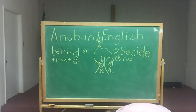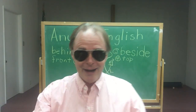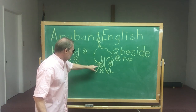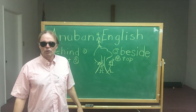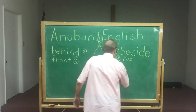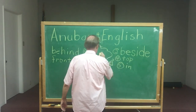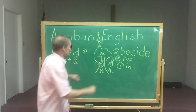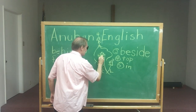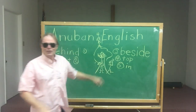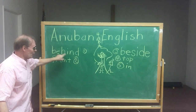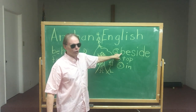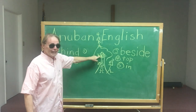So now what else can we do? We've got behind, in front, beside, and on top. What else? How about 'in'? Number five. So here we have leaves, and here's the girl — there she is. Can you see her? She's covered up — she's in the tree. So we have behind the tree, in front of the tree, beside the tree, on top of the tree, and in the tree. You think we can make a song about that?